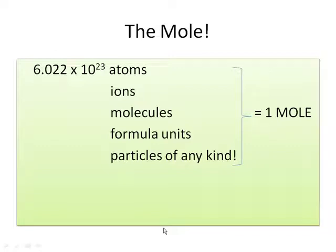And the mole is defined, one mole is defined as 6.022 times 10 to the 23rd of something. So it could be 6.022 times 10 to the 23rd atoms, or 6.022 times 10 to the 23rd ions, or molecules, or formula units, or particles of any kind.